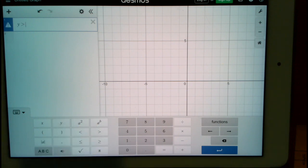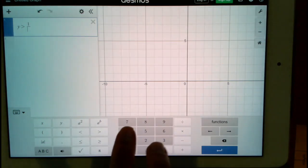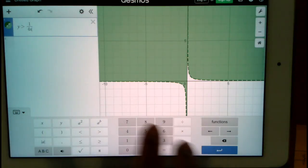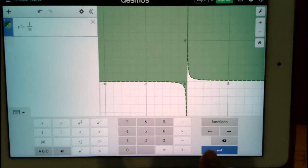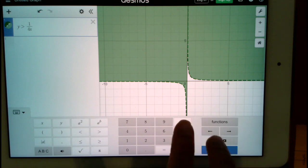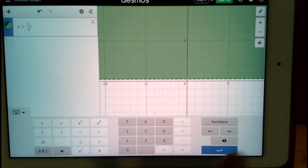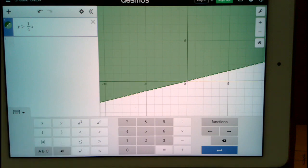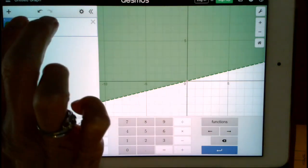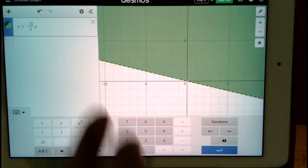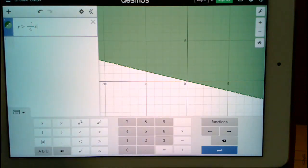y is greater than 1 divided by 4x... and it's negative 1/4x of course, negative 1/4x, we're getting closer, plus 2.